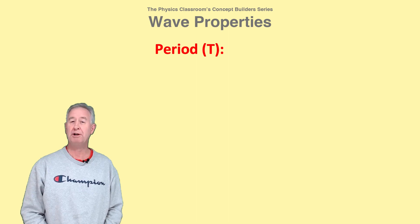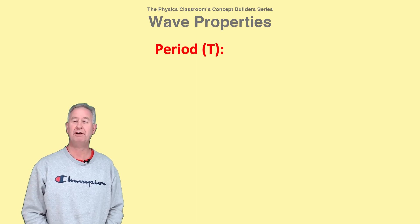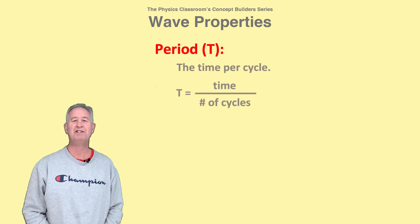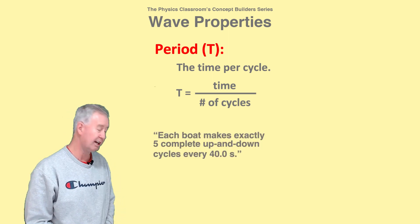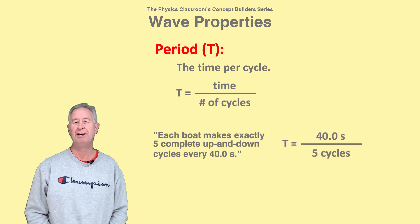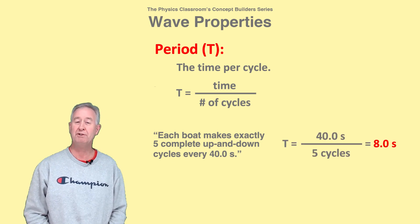Period refers to how much time it takes a particle to complete a vibrational cycle. It is the time per cycle. If you know the number of cycles in a specified amount of time, then you can calculate the period by dividing the time by the number of cycles.